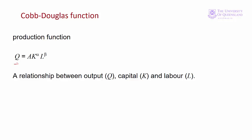Q is the output. K is the amount of capital we have and L is the amount of labour. So it's the combination of capital and labour that produces output Q. A is a constant that accounts for the level of technology. We'll come back to the Cobb-Douglas production function in later lectures.